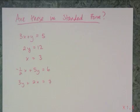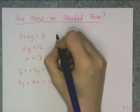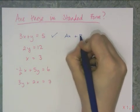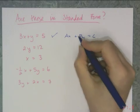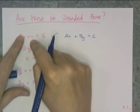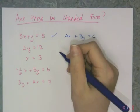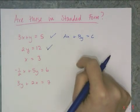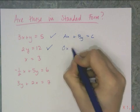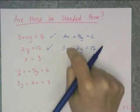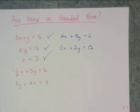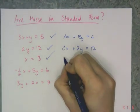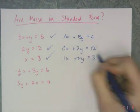The first thing you need to be able to do is recognize something in standard form and when something is not in standard form. So 3x plus y equals 5 is totally standard form, because I have ax plus by equals c, and a, b, and c are integers — 3, a phantom 1, and 5. And 2y equals 12 is totally in standard form: it's 0x plus 2y equals 12. Also, x equals 3 is totally in standard form — it's 1x plus 0y equals 3.